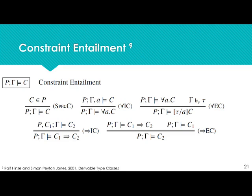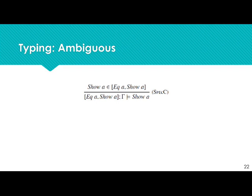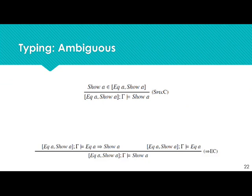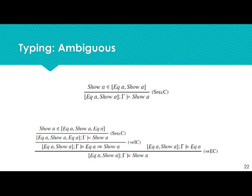However, these rules have one main disadvantage: they're highly ambiguous. For example, to entail the show A constraint, we can either note it's immediately in the program theory and entail it, or we can introduce constraint application, assume the premise, place it into the program theory, and note that show A is then in the program theory. It's easy to see that infinitely many derivations may exist for entailing the same constraint, which is not something we want.